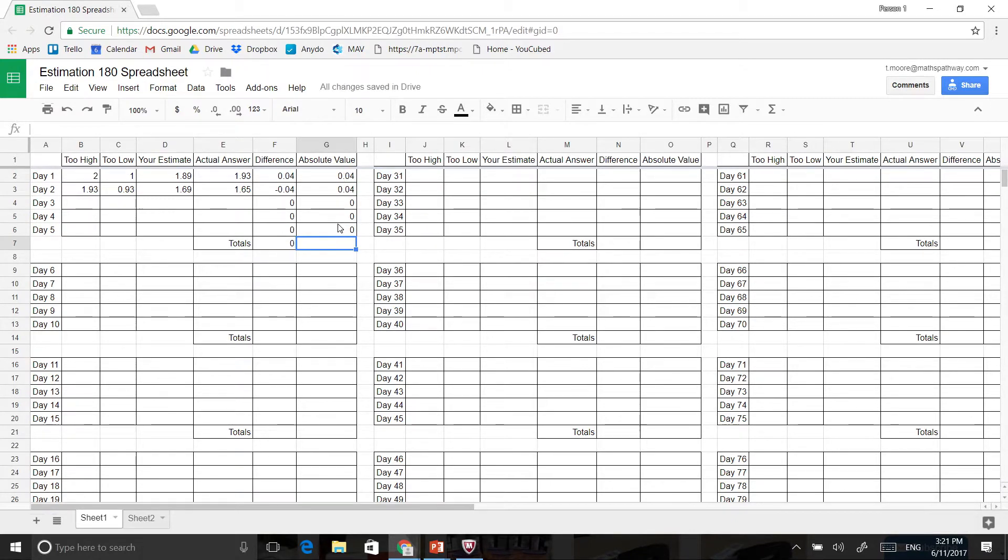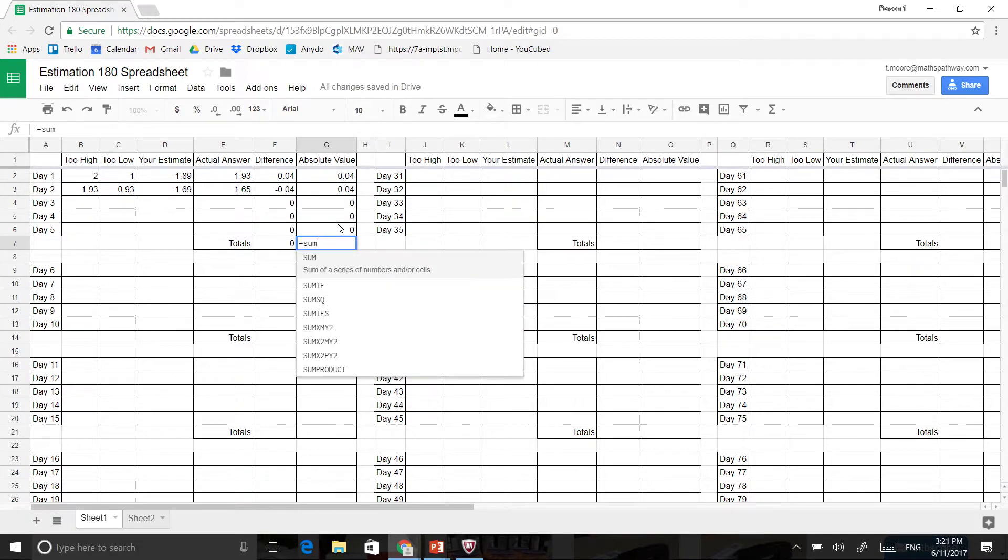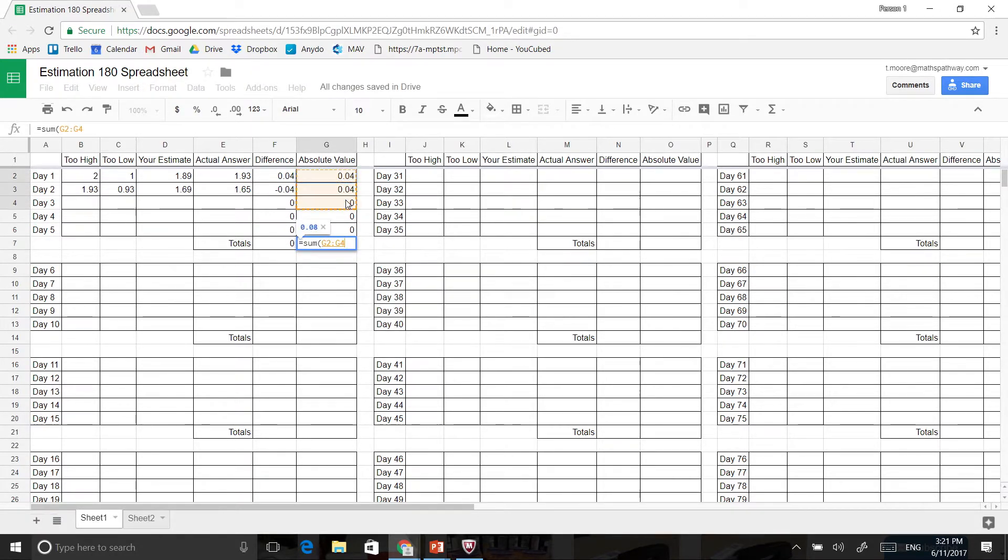And if I want to calculate the total, all I need to do is go equals sum, and I just highlight all of these here, like this, and press enter. And you can now see that it's actually calculated the absolute difference that I have, which is, of course, eight centimetres, and that's what we're more interested in, because that removes the negatives below or above that you could possibly have.